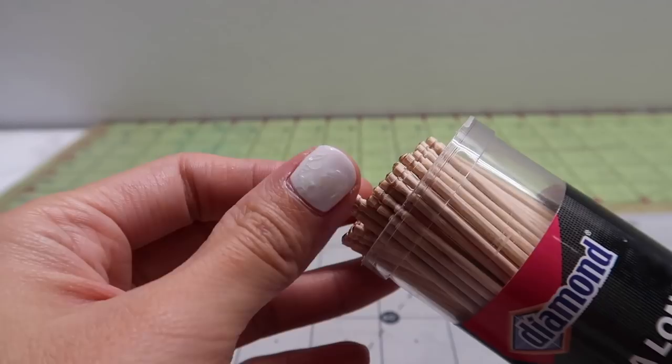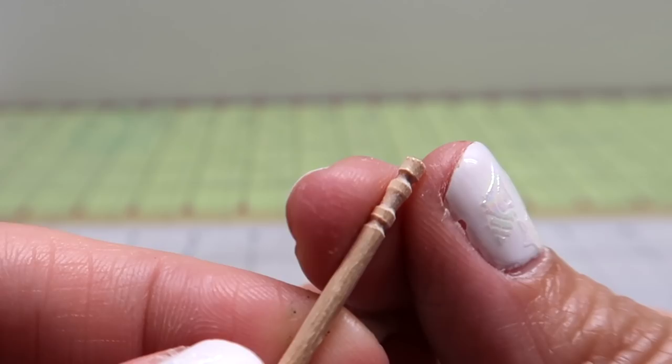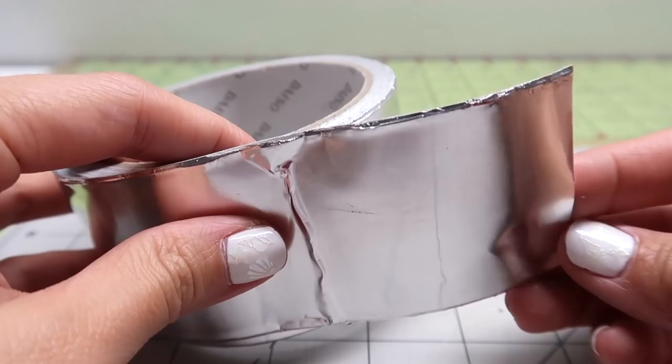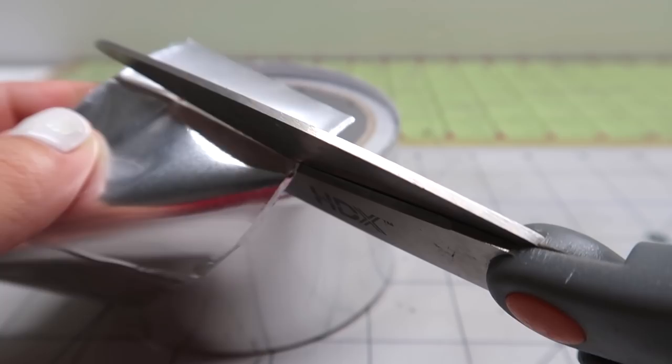Next up, let's make some miniature paint tubes. This is going to be super simple. Grab a toothpick with these decorative ends. Break off the decorative tip. It's the perfect shape for a paint tube cap. Then cut a half inch strip of foil. You can use aluminum foil or foil tape. I'm using the tape here because it's a bit easier.